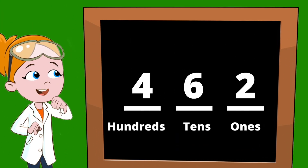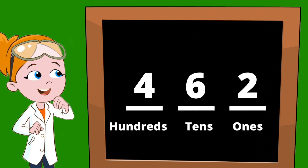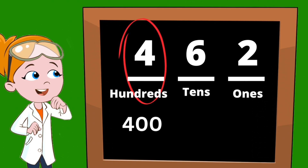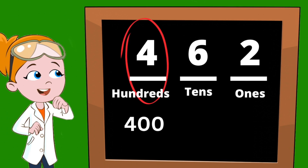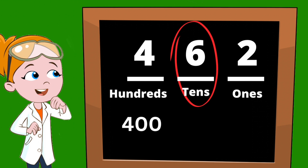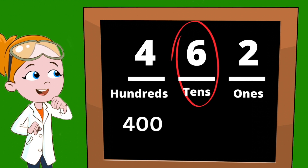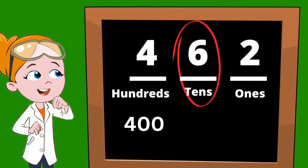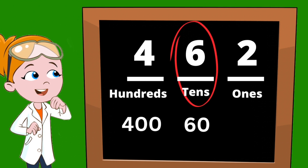Let's try a harder number: four hundred and sixty-two. Our four represents four hundreds, so our hundreds category has a value of four hundred. Now if we move over to our tens category, how many tens do we have? That's right — we have six tens, which means the value of our tens category is sixty.